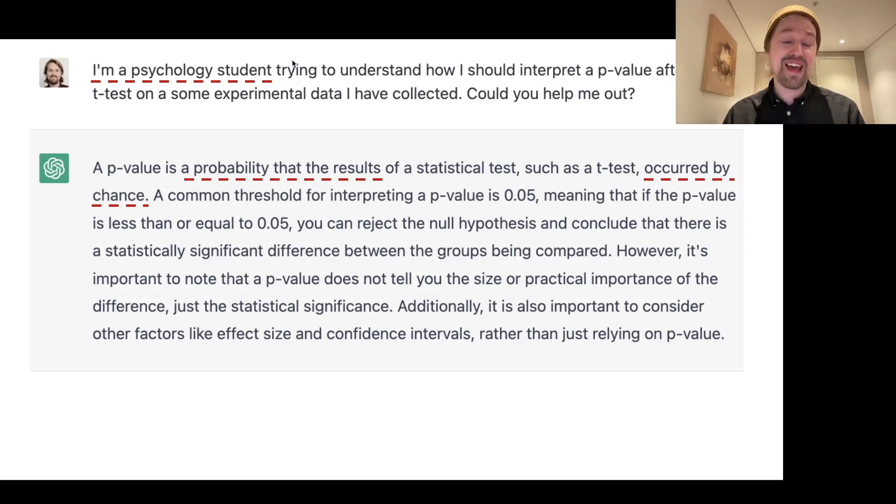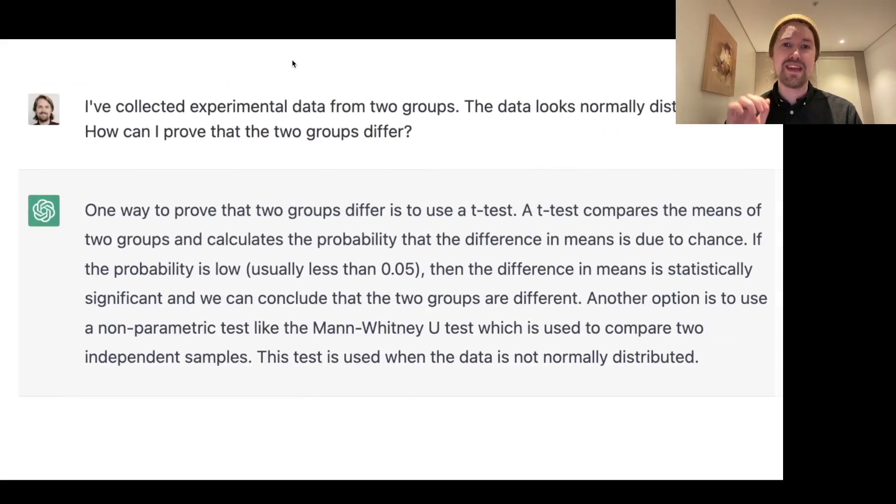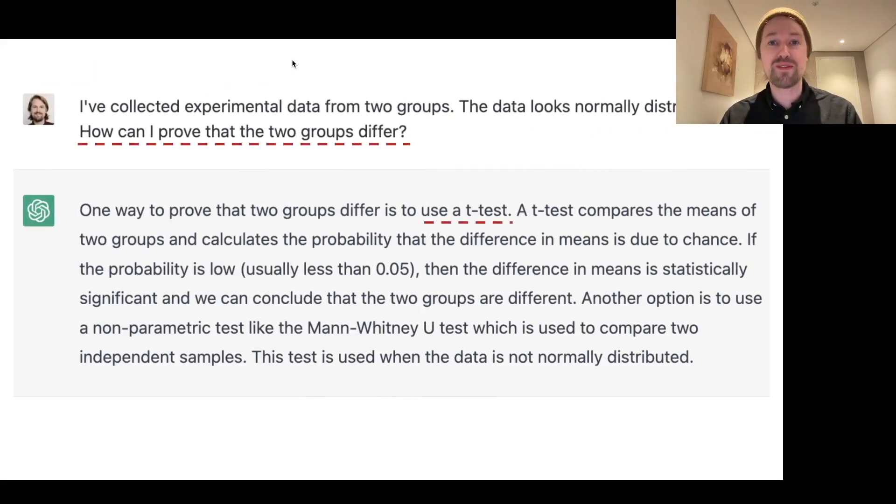Also, if I, for example, ask ChatGPT how I can prove that two experimental groups are different, ChatGPT is readily gonna recommend that I use a t-test to prove this, which, of course, this is something that you can't use a t-test to prove.